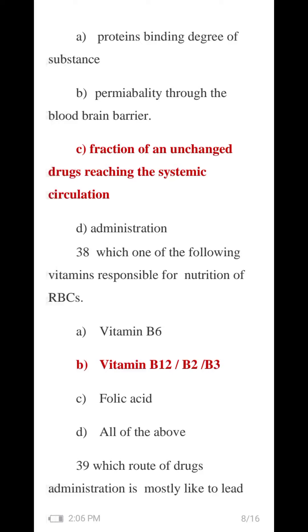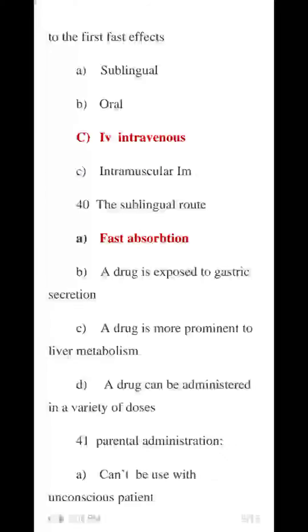Which route of drug administration is likely to lead to the first-pass effect? The sublingual route — absorption past drug exposed to gastric acid, drug is more prominent to liver metabolism. A drug can be administered in a variety of doses. For sublingual drugs, results occur within seconds. Sublingual is the correct option at 45%.